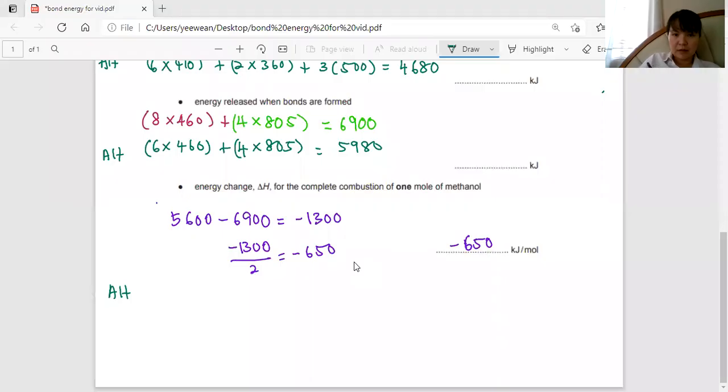Using the same method, I'm going to take the bonds broken minus the bonds formed. So 4680 minus 5980. I'm going to get the same.